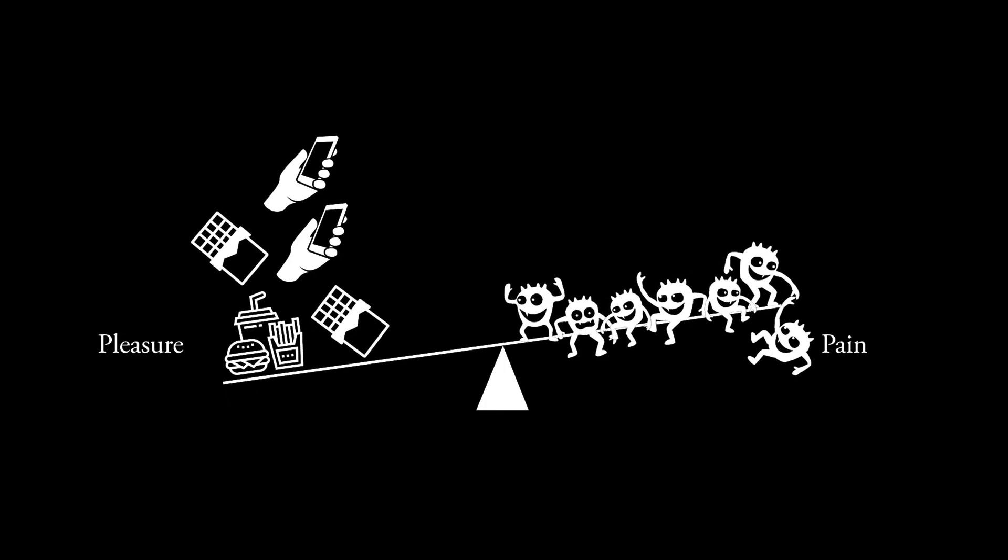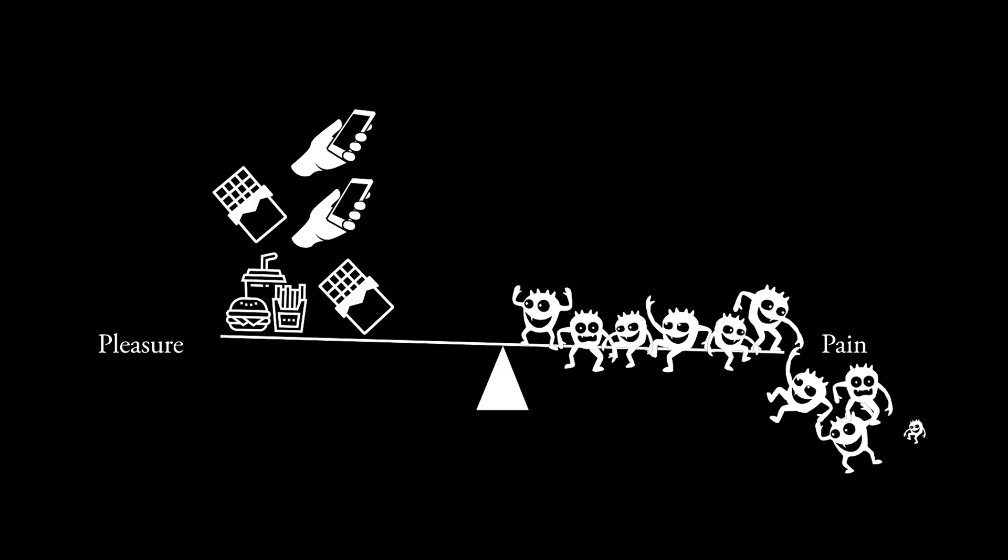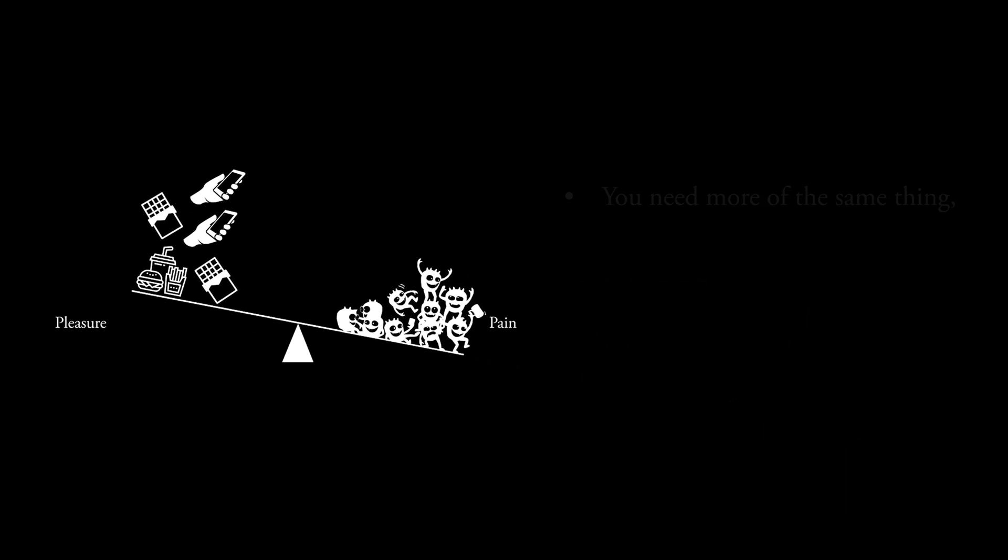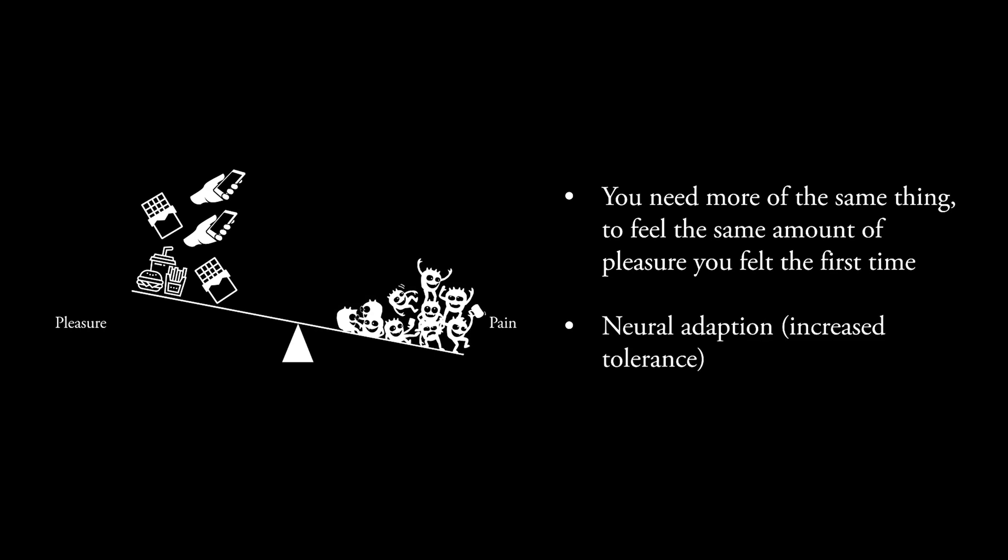Which means that the brain has to send even more gremlins to the pain side to counterbalance. Meaning, it'll cut even more back on your dopamine production, or make your dopamine receptor even less sensitive. So now you actually need more of the same thing to feel the same pleasure you felt the first time. This is also called increased tolerance, or neuroadaptation. So you see how this can quickly end in a negative downward spiral.